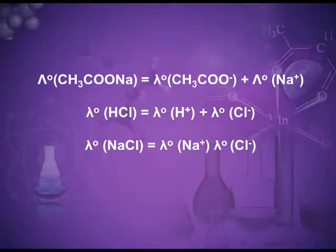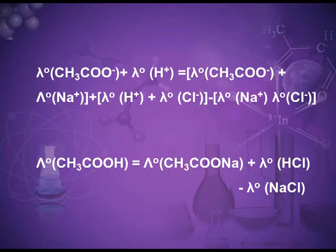But using Kohlrausch's law, we can find its limiting molar conductance by adding the contribution of acetate ions and hydrogen ions — values taken from strong electrolytes. To find lambda m infinity for acetic acid, we use three strong electrolytes: sodium acetate (contributing acetate and sodium ions), hydrogen chloride (contributing hydrogen and chloride ions), and sodium chloride (contributing sodium and chloride ions). By adding and subtracting the suitable values, we can find the theoretical value of lambda m infinity for acetic acid.